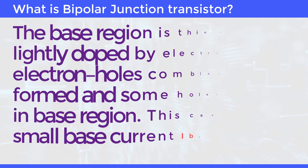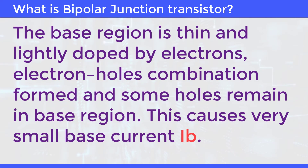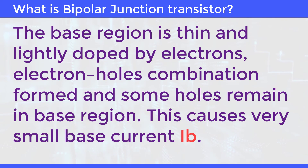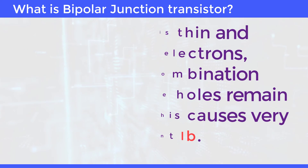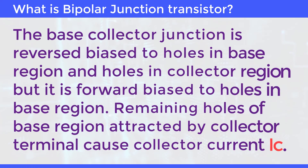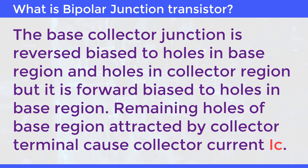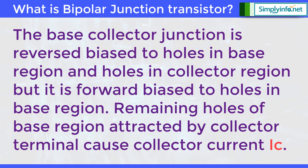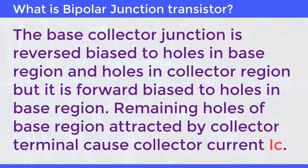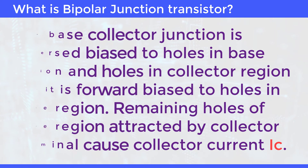The base region is thin and lightly doped by electrons. Electron-hole combination occurs and some holes remain in the base region, causing a very small base current IB. The base-collector junction is reverse biased to electrons in the base region and holes in the collector region, but it is forward biased to holes in the base region. Remaining holes in the base region attracted by the collector terminal cause collector current IC.